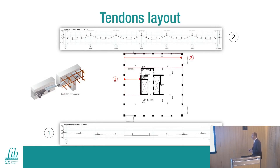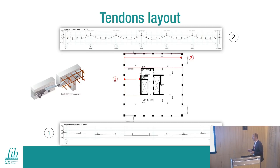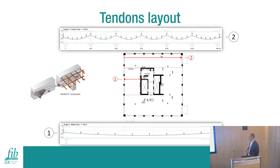Talking about the tendon layout, typically we have a single drape parabolic tendon spanning perpendicular to the slab edge, and parallel to the edge we have a classic tendon layout with high points at supports and low points in between supports. In terms of PT system, in the UK it is very common to have bonded tendons with 12.9 or 15.7 mm diameter strands. Multi-strand systems are rarely used, and are more applicable on lower levels with massive transfer structures.